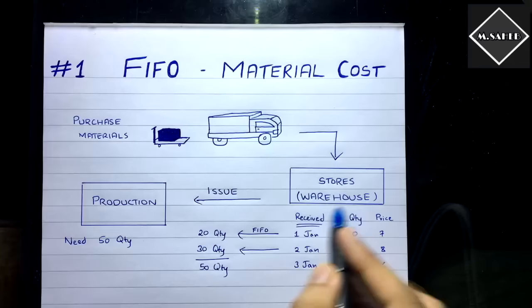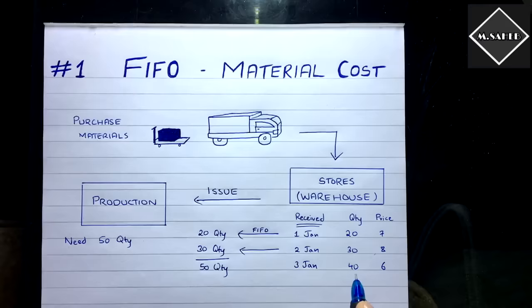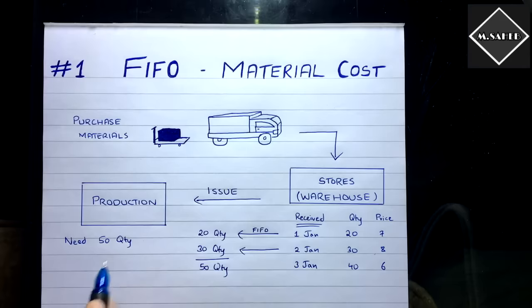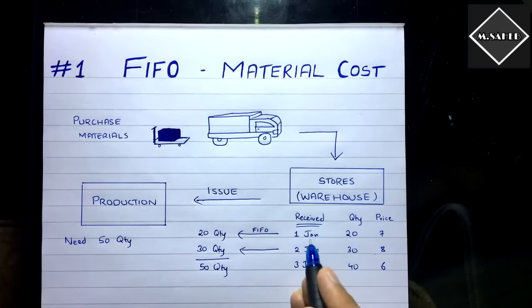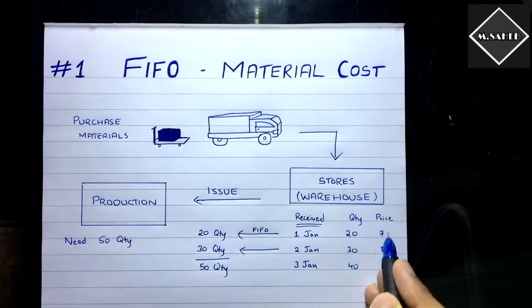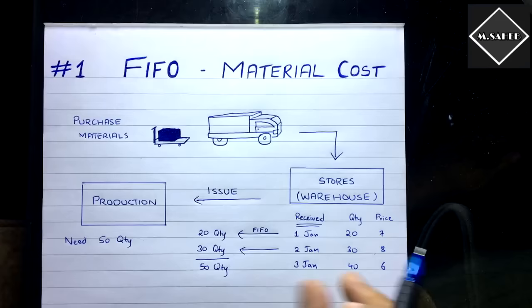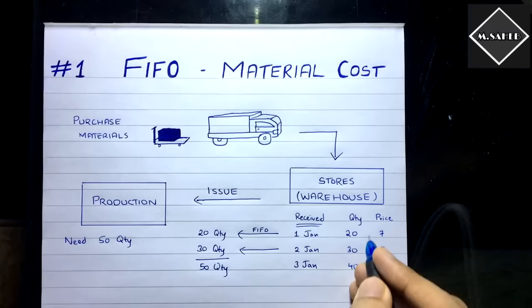For example: on 1st January your warehouse received 20 quantity at price ₹7; on 2nd January, 30 quantity at ₹8; on 3rd January, 40 quantity at ₹6. Now the production department requests 50 quantity. Following FIFO, you first pick the 20 quantity at ₹7 (which came first), and then you need 30 more, so you pick 30 at ₹8. That is the first-in-first-out order.